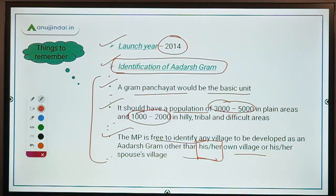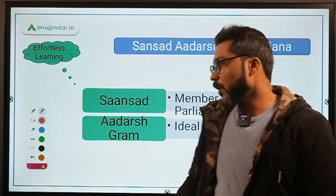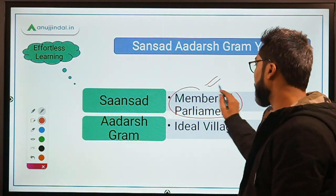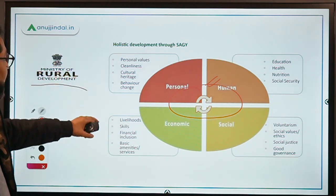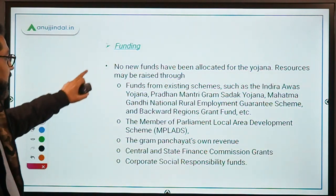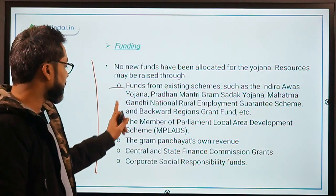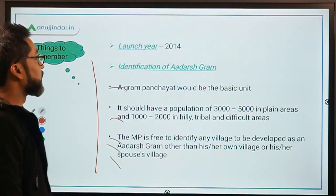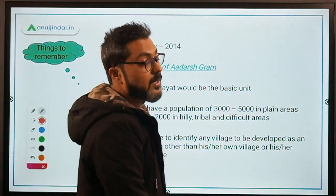So that's it for the scheme. The objective is that villages will be developed, and each Member of Parliament will take responsibility for developing a village as an ideal village. The ministry is the Ministry of Rural Development, and holistic development is provided — personal, economic, social, and human development. No new set of funds has been provided; existing funds are used. The scheme was launched in 2014, and these are the criteria for identification of an Adarsh Gram.